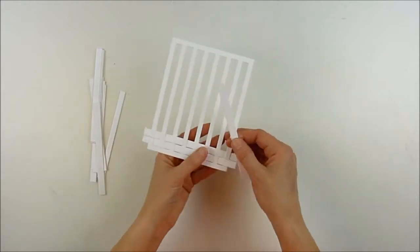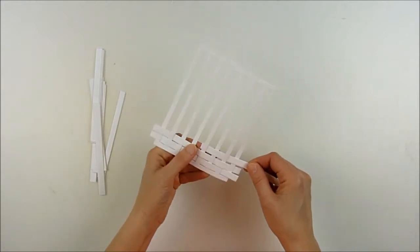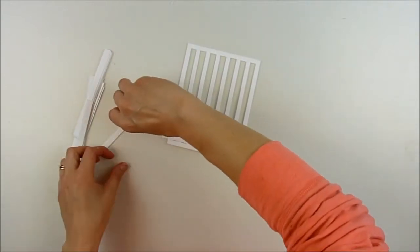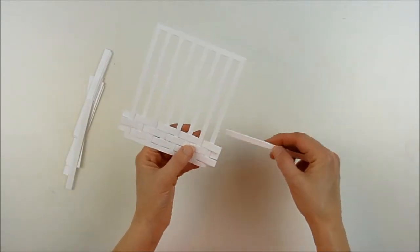Now what I'm doing is just weaving each strip. If you've ever done any weaving, it's just over, under, over, under, and alternate each one to create the basket weave pattern. I'm going to speed up this part a little bit.